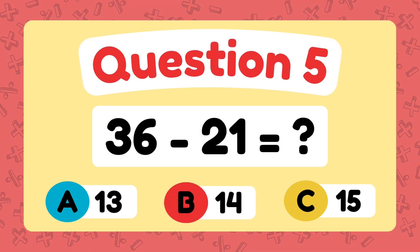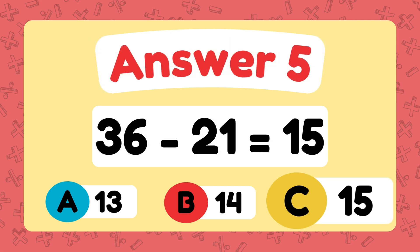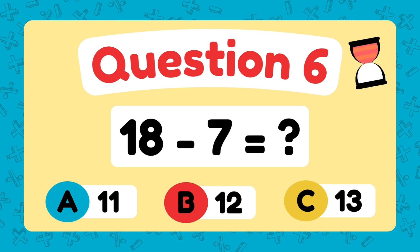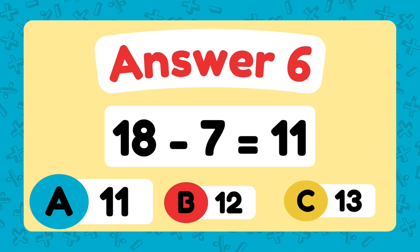What is 36 minus 21? The answer is 15. What is 18 minus 7? The answer is 11.